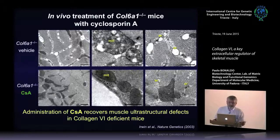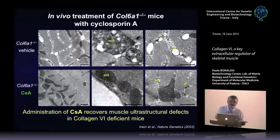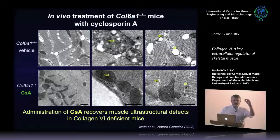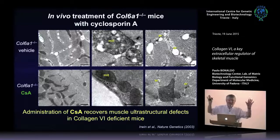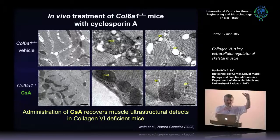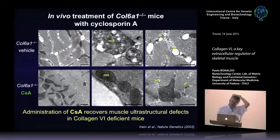What I was not expecting is that if you lose a matrix protein you have alterations in mitochondria. Now the question is: what is the difference between wild-type and knockout — they don't have collagen 6 — but what is in between? Why does the lack of a matrix protein alter mitochondria? We will reach this part of the answer later in the presentation.